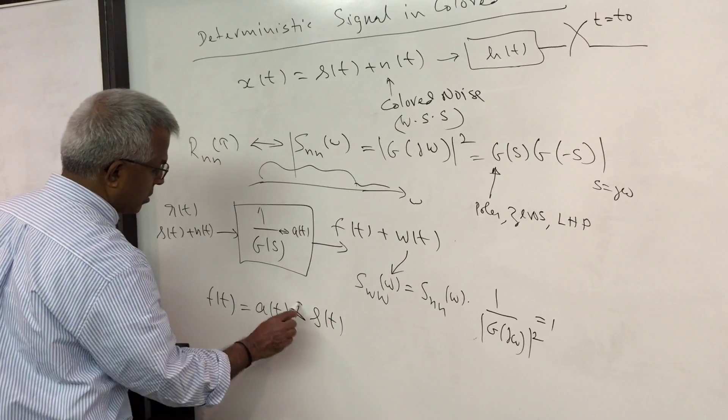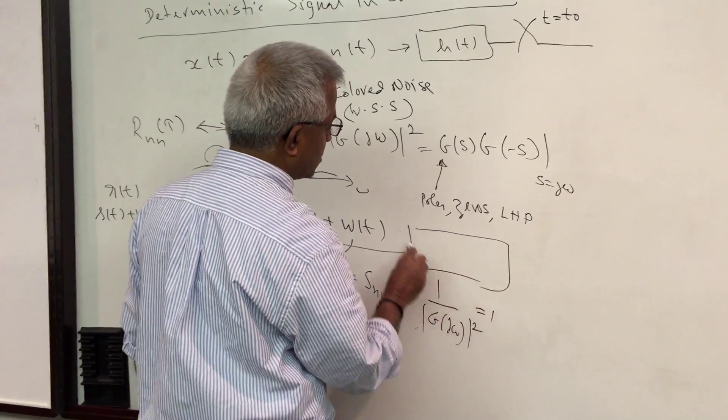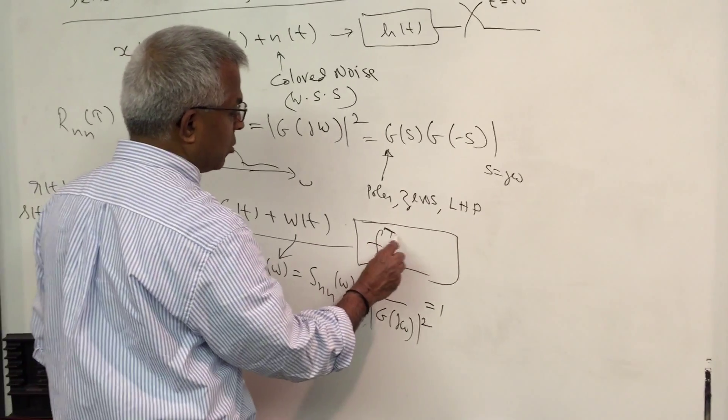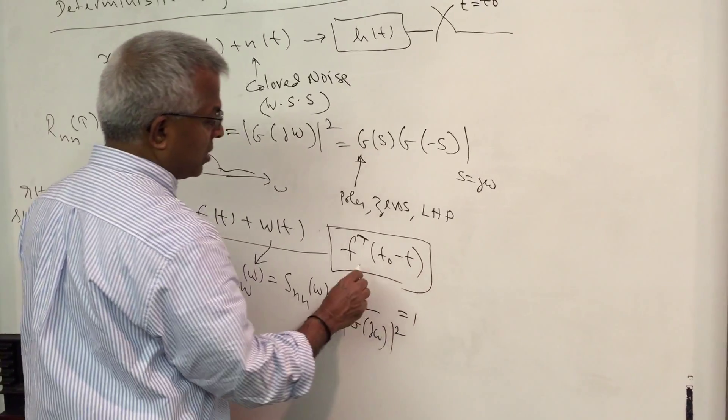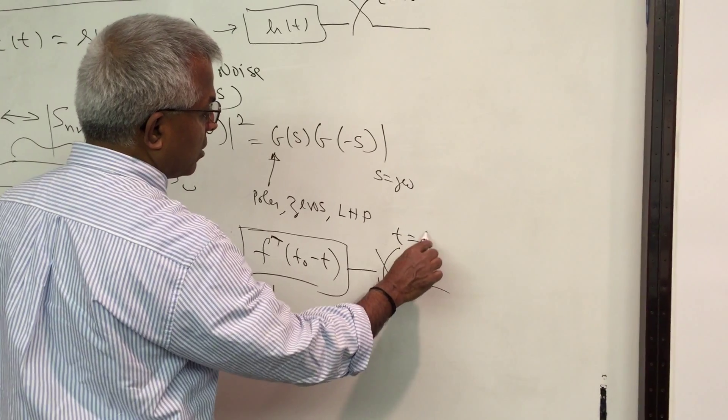So from here the answer is - if a signal is in white noise, a filter which is matched to f is the optimum filter. So this is the matched filter for white noise case.